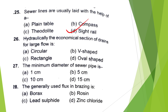The economical section of drains for large flow — the hydraulically economical section — the answer is option A — Circular shaped.